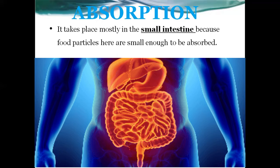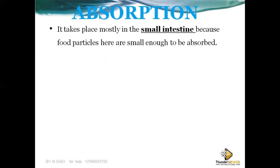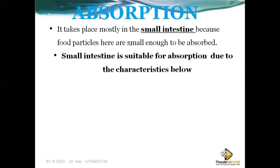Final digestion occurs in the ileum and duodenum, which are both parts of the small intestine. Absorption also takes place there. The small intestine is suitable for absorption partly because it is long — approximately six meters — and it is coiled to increase the surface area for absorption.